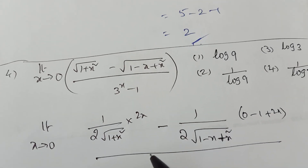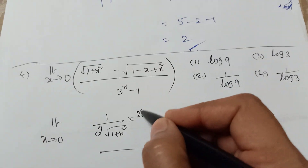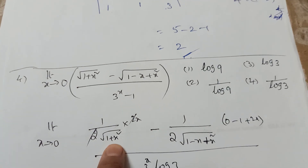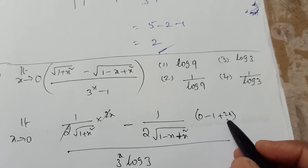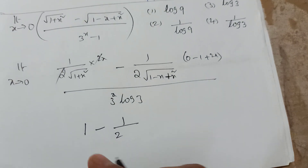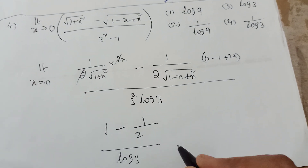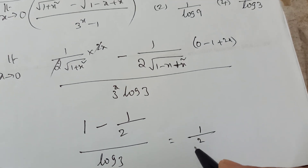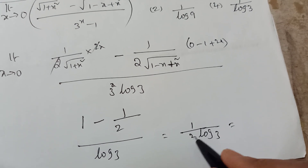Denominator derivative: using the formula, derivative of 3ˣ is 3ˣ·log3. Now apply x = 0: numerator becomes 0/√1 − (−1)/(2√1) = 0 − (−1/2) = 1/2. Denominator: 3⁰·log3 = 1·log3 = log3. So the answer is (1/2) / log3 = 1/(2log3).